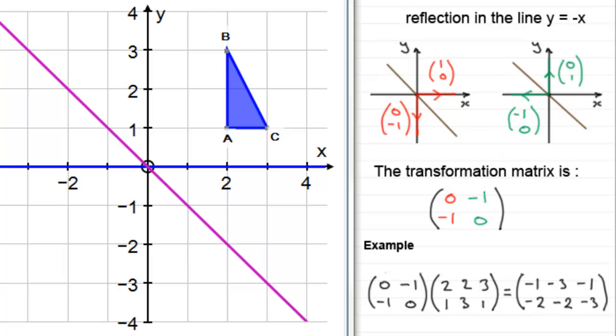If we start to plot these points: A at 2, 1 now moves to its image at minus 1, minus 2. Minus 1, minus 2 is that point down there.